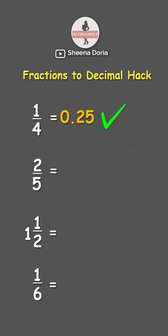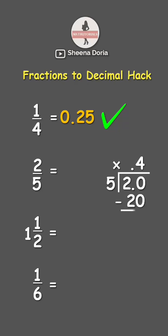Next, let's have 2 fifths. So let's divide 2 by 5. Since 2 is smaller, we need to add 0.0. So that's 20 divided by 5, which is 4. Don't forget to put the decimal point. Now 4 times 5 is 20. 20 minus 20 is 0. Since there's no remainder left, the answer is 0.4.